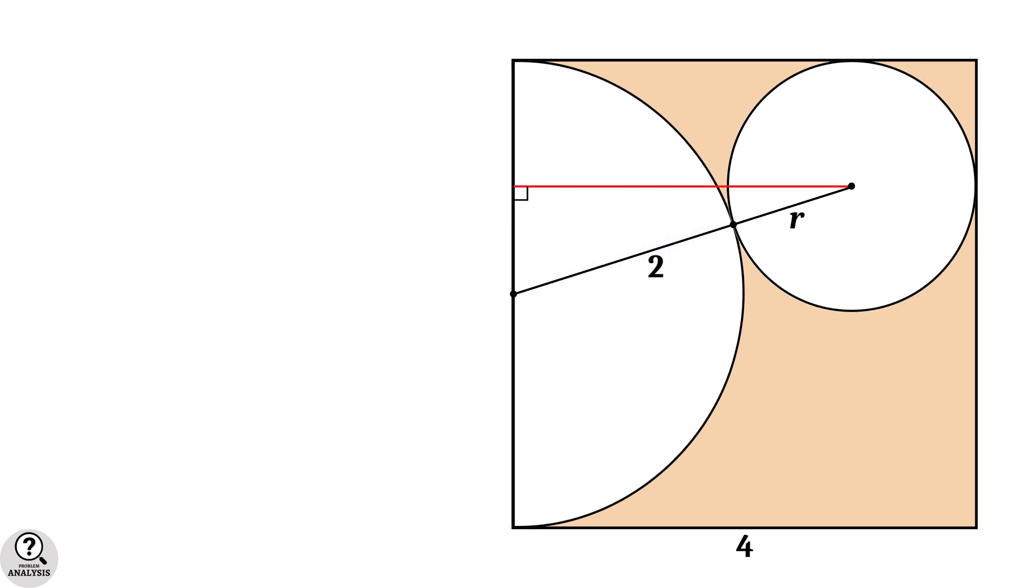Now, draw this perpendicular line to form a right triangle here. Clearly, its hypotenuse is equal to two plus r.